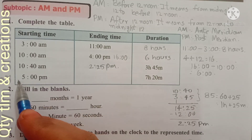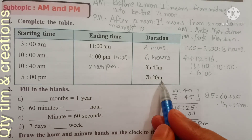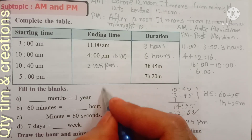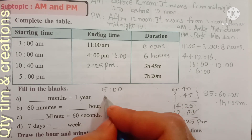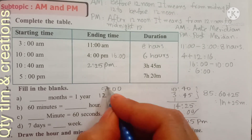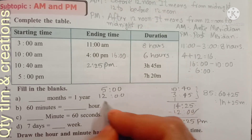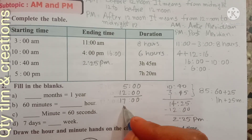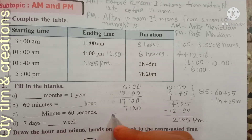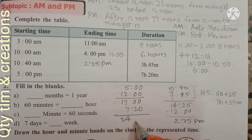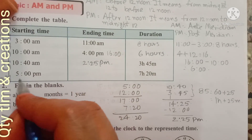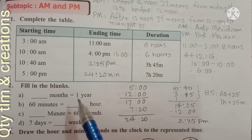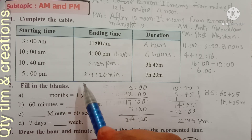Next: starting time is 5 PM and duration is 7 hours 20 minutes. We convert 5 PM to 24-hour time: 5 plus 12 equals 17 hours. Then add the duration: 17 hours plus 7 hours 20 minutes equals 24 hours 20 minutes. So the ending time is 24 hours 20 minutes, which means midnight 12:20.